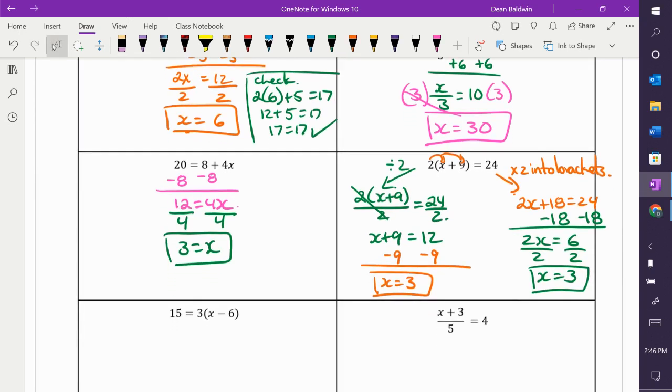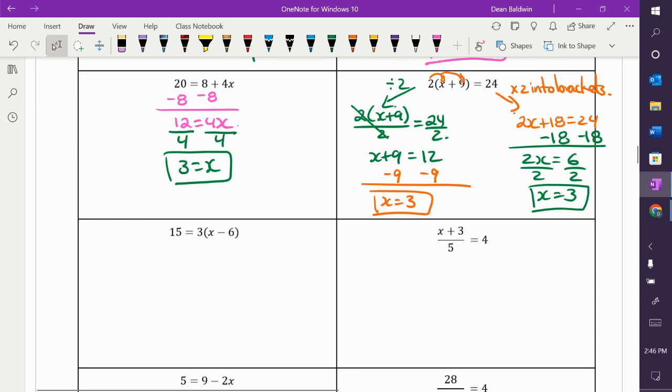Which way do you like more? Depends on the question. I think if I was you, I would probably just get rid of the brackets first every time. All right. And then, that's a simple method that you can always just follow. So, let's do that on this one here. Fifteen is equal to three times X minus six. Get rid of the brackets. Turn it into a regular one.